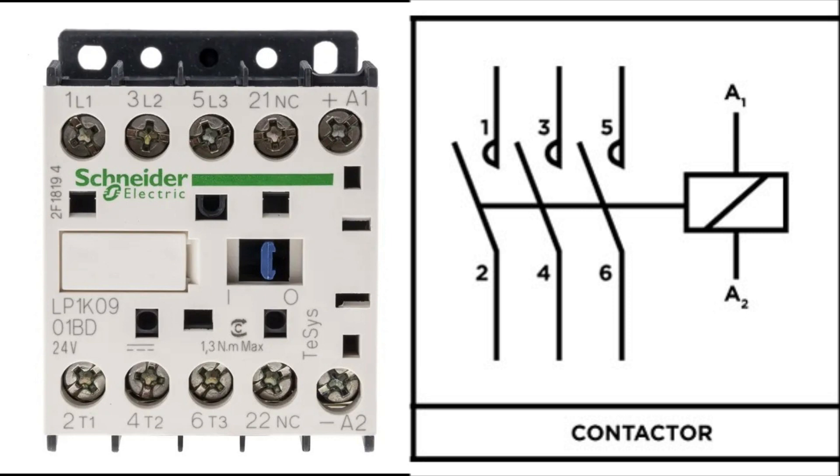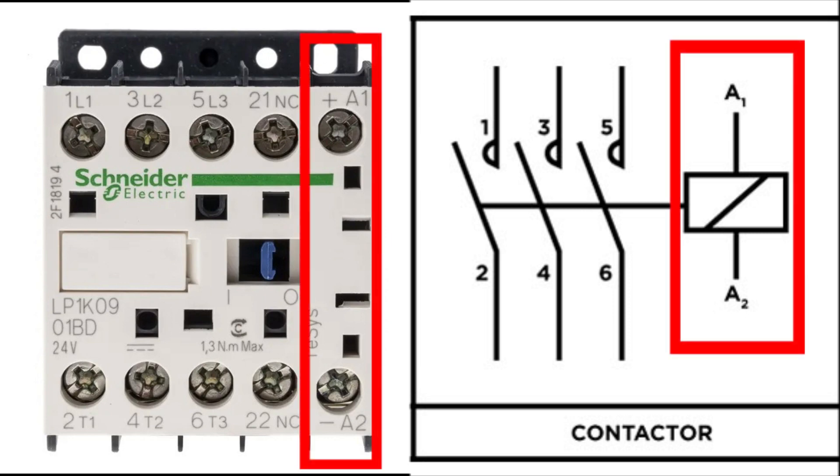Contactors work very similar to a relay. You've got one terminal called A1 and one called A2. In some cases you will also see them being named just A and B. It is mostly common amongst older contactors.